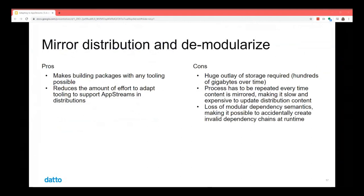The loss of modular dependency semantics makes it possible to accidentally create invalid dependency chains at runtime. What may work when you build and test against the demodularized tree may not work properly for customers on their regular systems, because the dependency semantics within modules or app streams would actually block you from being able to install it.